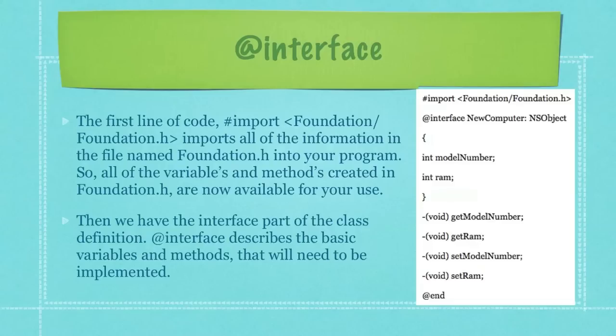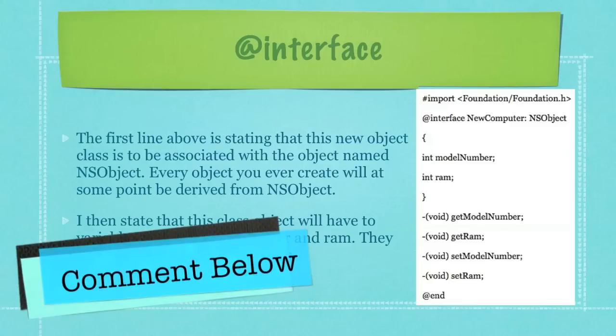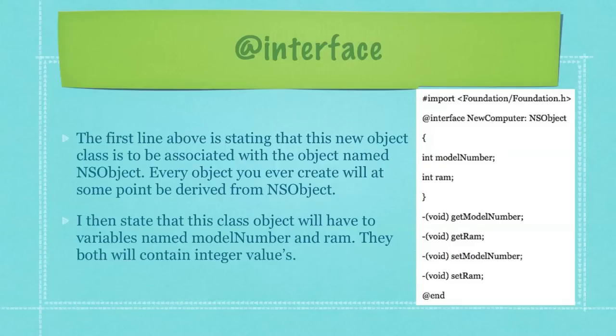Then we have the interface part of the class definition which begins with an @ sign followed by the word interface and this describes the basic variables and methods that will need to be implemented in the implementation part of your program. The first line above is stating that this new object class is to be associated with the object named NSObject. Every object you ever create will at some point be derived from NSObject.